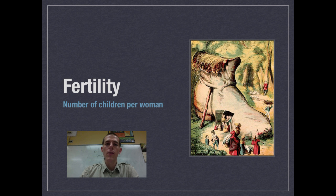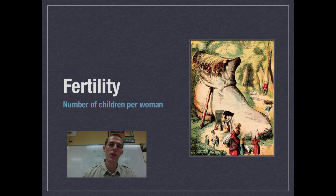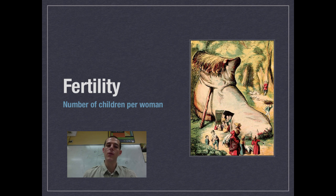A couple of things drive the growth of a population. When demographers look at populations to figure out what's causing growth or shrinkage, the first major factor is fertility. Fertility is the number of children per woman. If you take all births in a country in a given year and divide by the total number of women of reproductive age, you get the average fertility — does the average woman have one kid, two kids, four kids? Based on where in the world you are, fertility is going to be different.